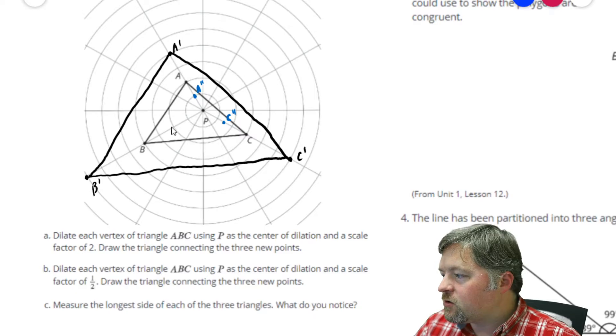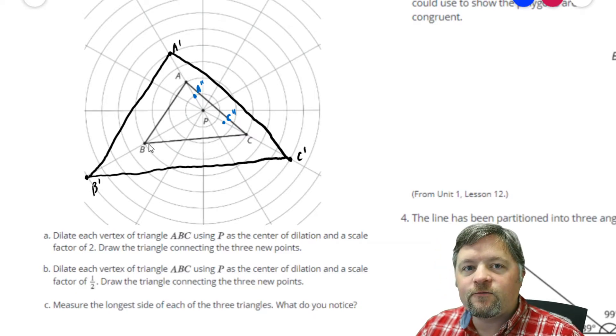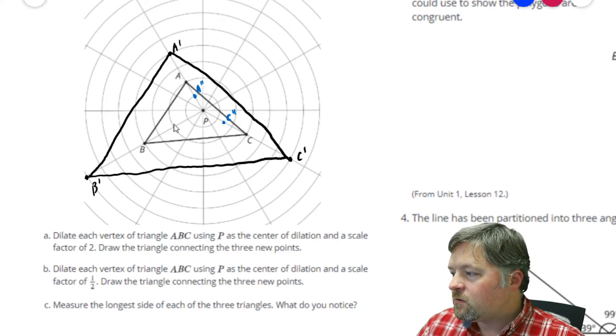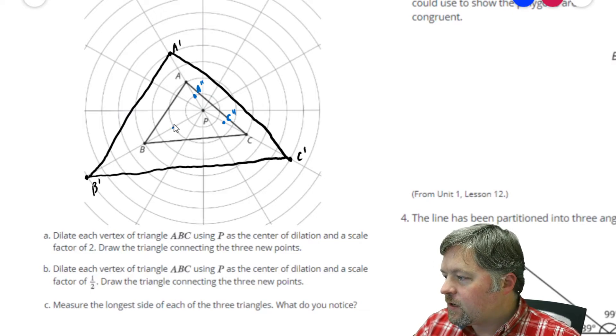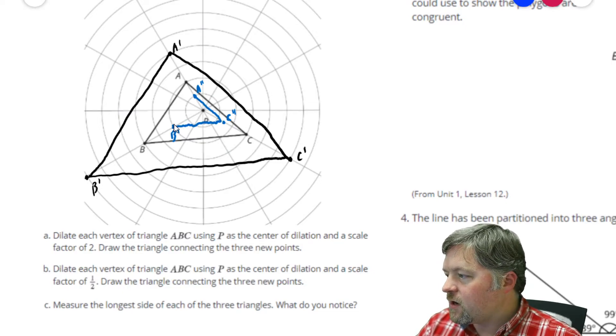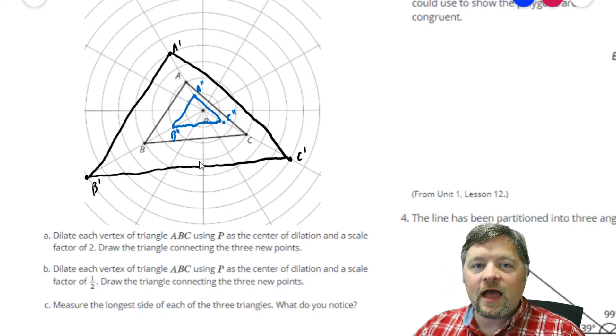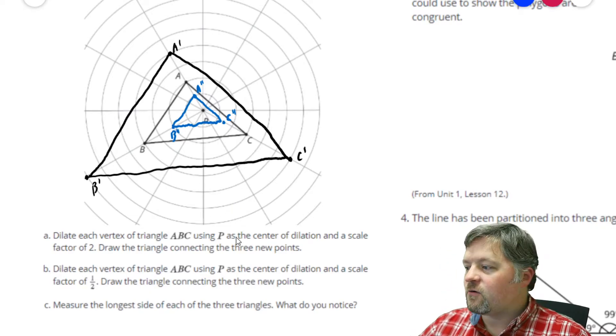And B is 1, 2, 3, 4 units away. 4 times 1 half is 2. That point has to go right here. B double prime. A new smaller triangle. Because our scale factor was 1 half. The scale factor was between 0 and 1.